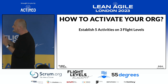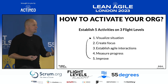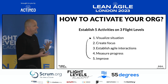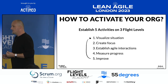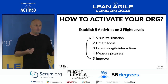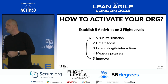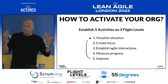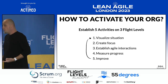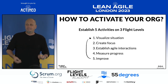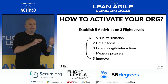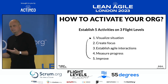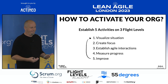What are organizations doing when they are working with Flight Levels? In the end, it's about incorporating five activities on three different levels. The first activity is visualizing the situation. Knowledge work is invisible, so when we are dreaming of doing improvements, it makes a lot of sense to see what's actually going on — we don't want to fly blind. The second activity is creating focus, which is about shifting behavior from starting to finishing. Starting work costs money; finishing work brings money.